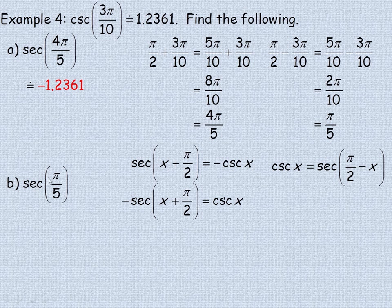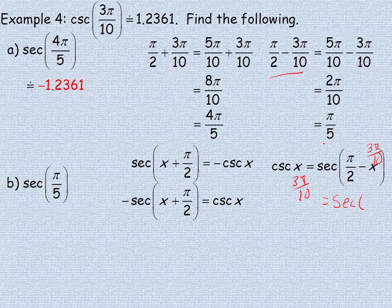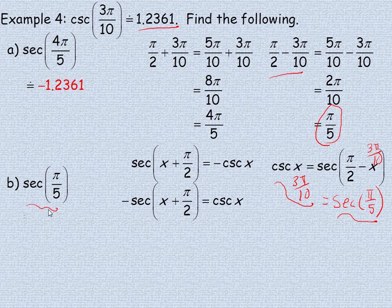For part B, we're looking for the secant of pi over 5. Taking 3 pi over 10 and subtracting it from pi over 2 gives pi over 5. Using the identity where cosecant of pi over 2 minus x equals secant of x, the secant of pi over 5 equals the cosecant of 3 pi over 10 — the same value, including the sign. So the secant of pi over 5 is also approximately 1.2361.